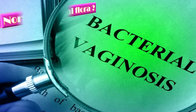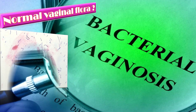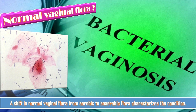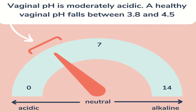The normal vaginal flora are microorganisms that are always present on or in a person and usually do not cause any disease. In bacterial vaginosis, a shift in normal vaginal flora from aerobic to predominantly anaerobic flora occurs, and this characterizes the condition. This leads to replacement of lactobacilli and an increase in pH from the normal of 4.5 to 7.